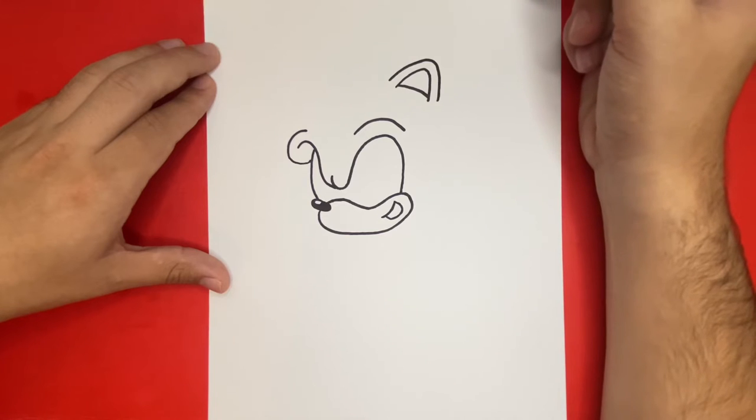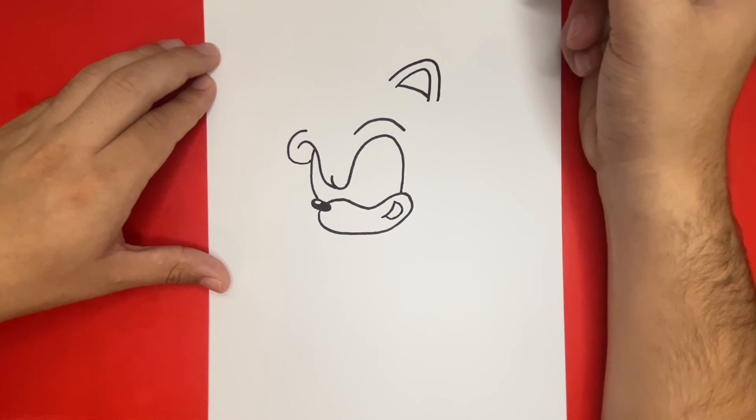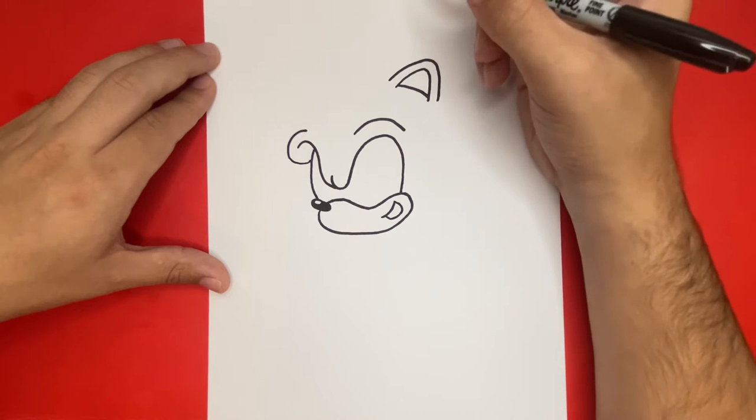Are you all done? If so, let's continue. Now on the inside of this shape that we made for the outline of the eyes, let's go ahead and draw the actual eyes themselves.